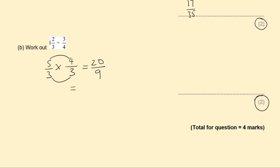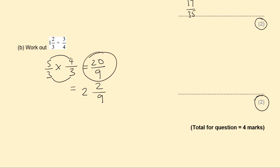9 goes into 20 twice — 9 times 2 is 18 — remainder 2. So the answer is 2 and 2/9. Or you can leave the answer as 20 over 9. According to the mark scheme, the answer is 20 over 9. Altogether this question is worth four marks.